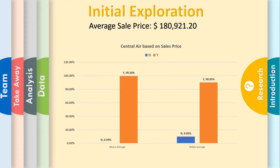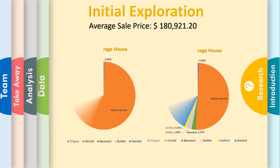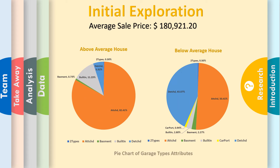This chart shows that most houses above average price do have AC, and the ones that are below average — 10% of them do not. The following two charts show the garage tab attributes depending on the house price.